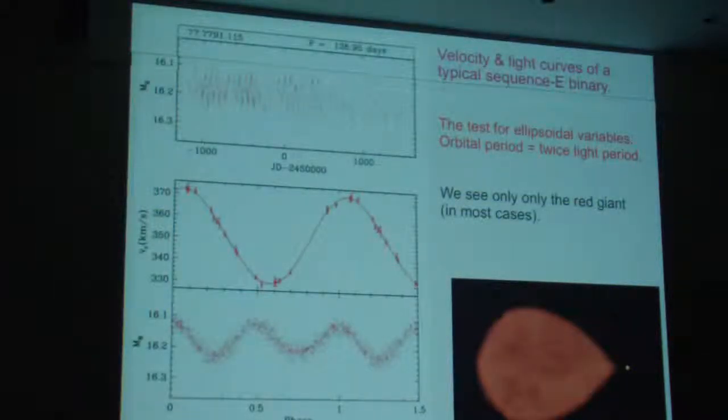So the absolute test for an ellipsoidal variable is that if you have a velocity curve and a light curve, you get two cycles of the light curve for one cycle of the velocity curve. And that's because red giants are more or less the same temperature all over. And if you have a shape like that, when it's side on, it has the maximum area that you can see apparently. And so that gives you the maximum luminosity.